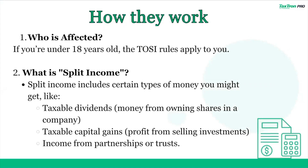Who is affected? If you're under 18 years old, the TOSI rules apply to you. What is split income? Split income includes certain types of money you might get, like taxable dividends, money from owning shares in a company, taxable capital gains, profit from selling investments, or income from partnerships or trusts.